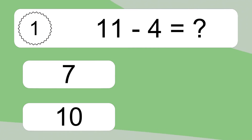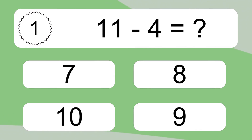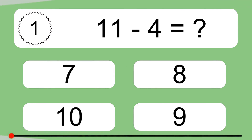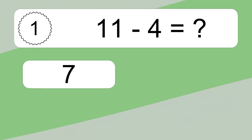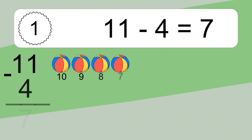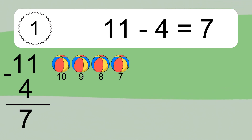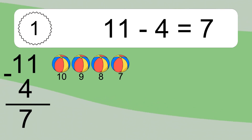11 minus 4 equals what? 11 minus 4 equals 7. Let's count it: 10, 9, 8, 7.